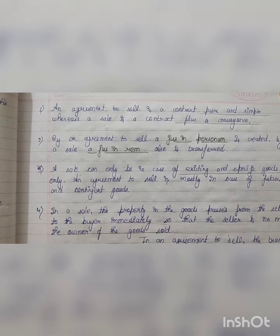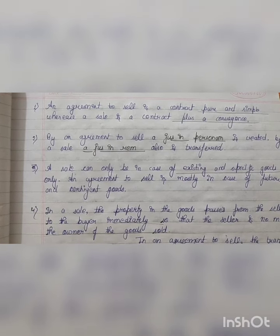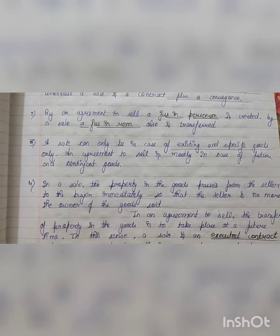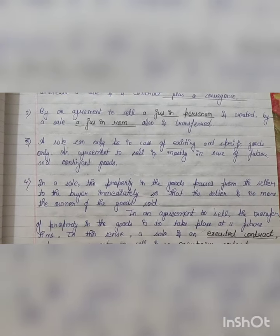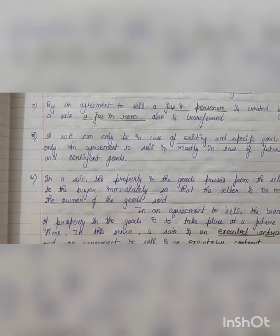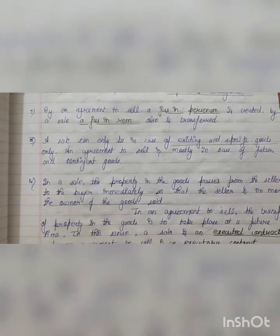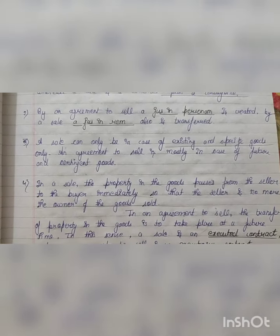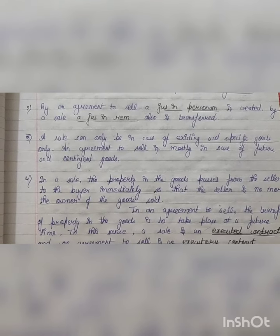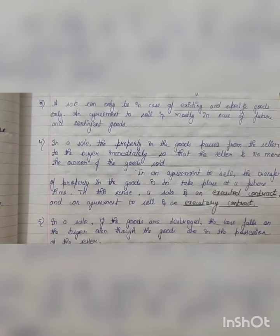A sale can only be in the case of existing and specific goods. An agreement to sale can only be in the case of existing goods. We have four differences to consider here.